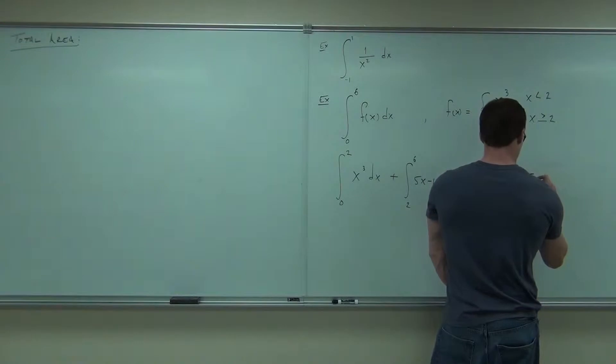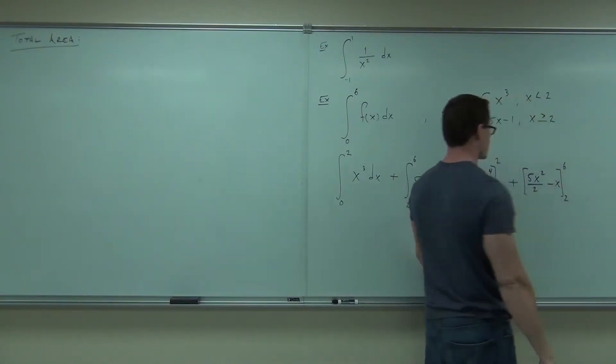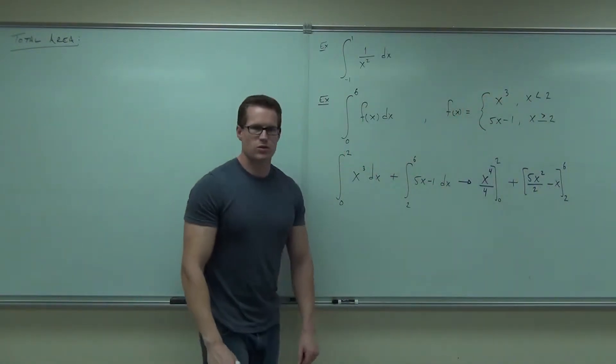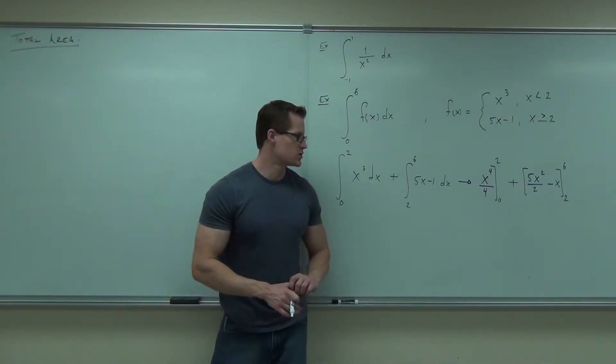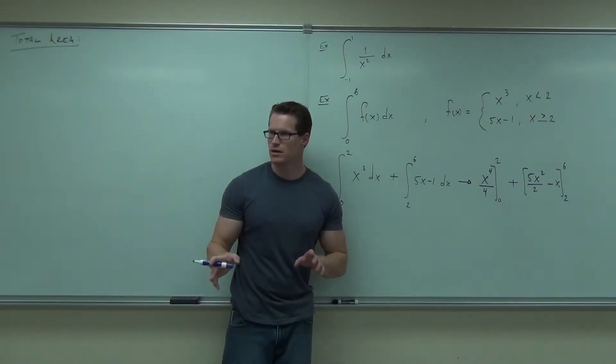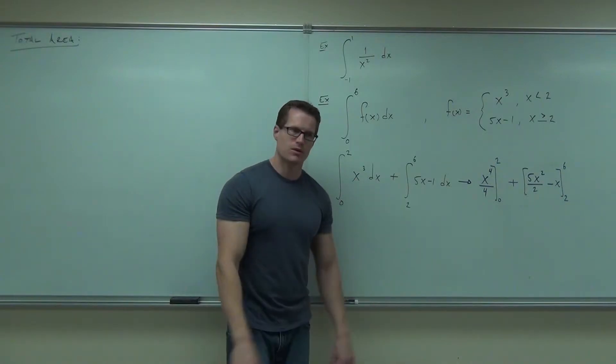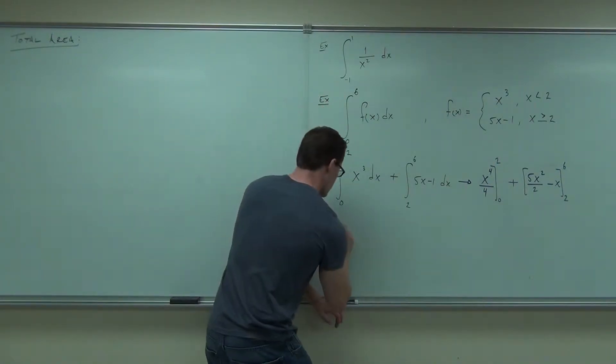New math. Did you all get your integrals correct? You got x to the 4 over 4 from 0 to 2. You got 5x squared over 2 minus x. You don't forget that minus 1, right? From 2 to 6. Did you get that far? Now we plug the numbers in. I don't know if I should count on you guys on that one.